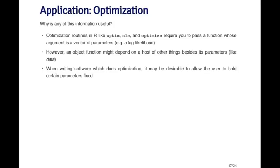There are a few optimization routines in R called optim, NLM, and optimize, and they all require that you pass a function to those functions whose argument is a vector parameter. There's going to be some function that you want to minimize or maximize over a range of parameters, and functions like optim, NLM, and optimize take that kind of objective function and try to find the minimum or the maximum.